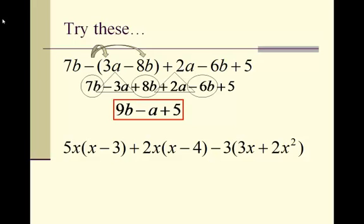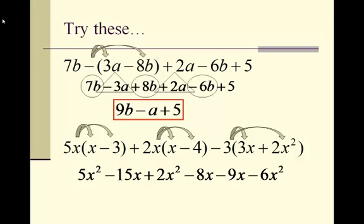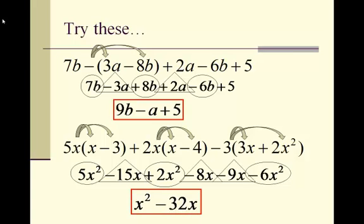On the second problem, we want to distribute 5x through the first parentheses, 2x through the second parentheses, and negative 3 through the third parentheses. 5x times x is 5x squared; 5x times negative 3 is negative 15x. In the second set we get 2x squared minus 8x. In the third set we get negative 9x minus 6x squared. Looking for like terms: 5x squared plus 2x squared is 7x squared, minus 6x squared is 1x squared, or just x squared. Negative 15x, negative 8x, and negative 9x combine to make negative 32x. Final answer is x squared minus 32x.